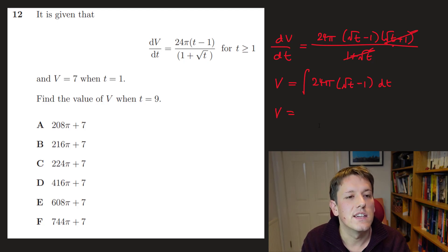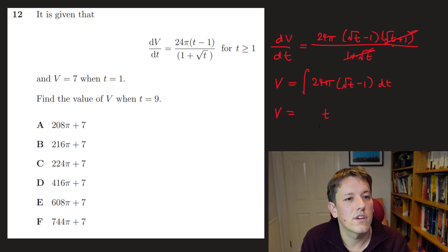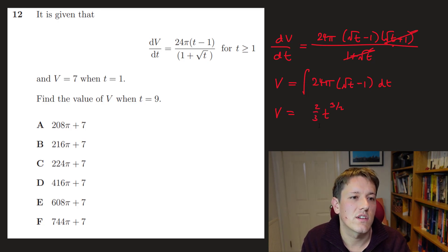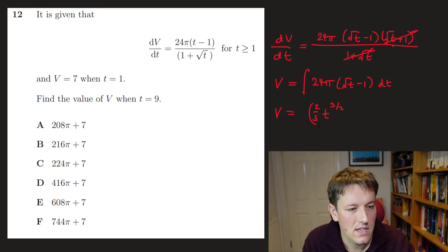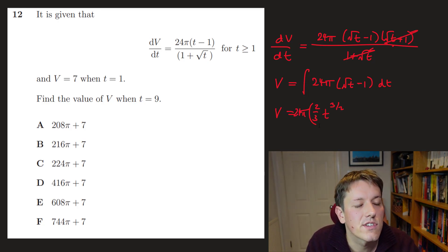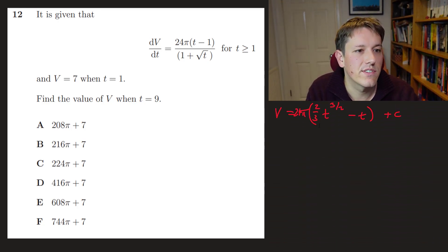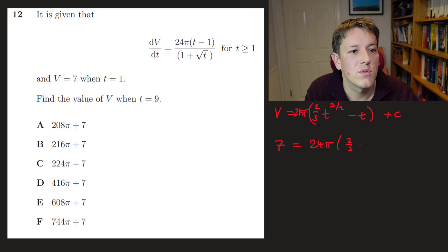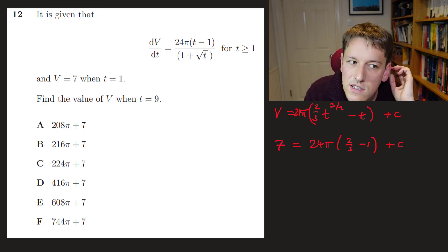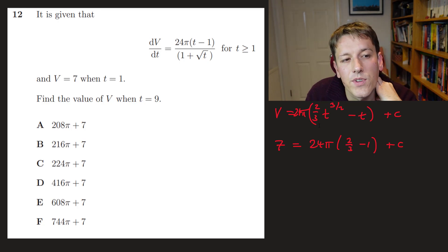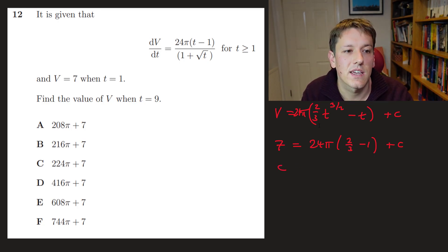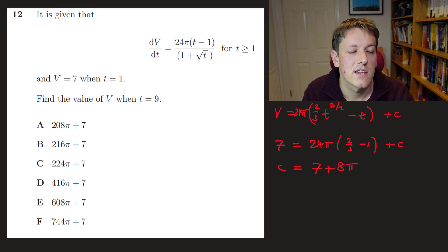Integrating gives v = 24π·(⅔·t^(3/2) − t) + C. Using the initial condition v = 7 when t = 1: 7 = 24π·(⅔ − 1) + C = 24π·(−1/3) + C = −8π + C, so C = 7 + 8π.